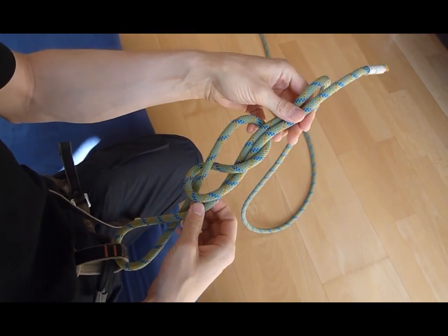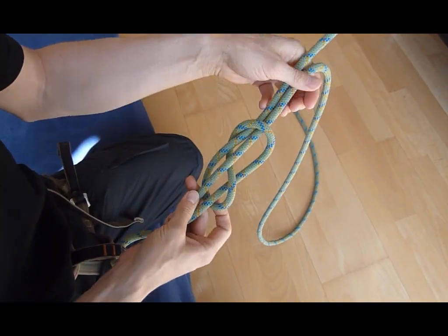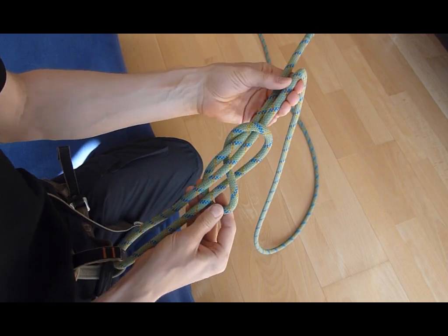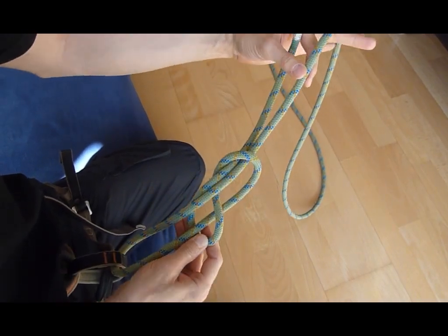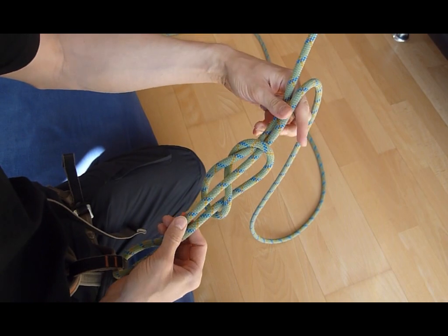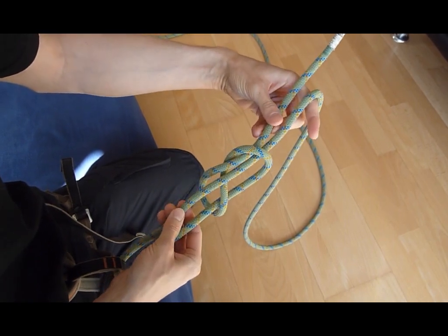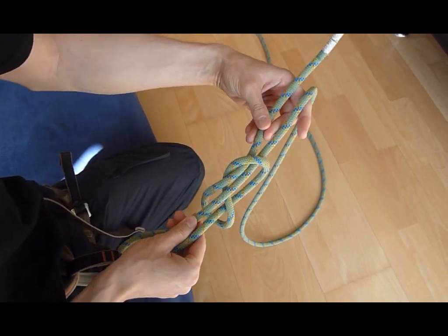And as you can see, the Yosemite bowline is nothing more than a simple figure eight with the main rope passing through it. This can always happen when you tie the Yosemite bowline. It doesn't necessarily happen every time, but you don't really need to do something wrong for it to happen.